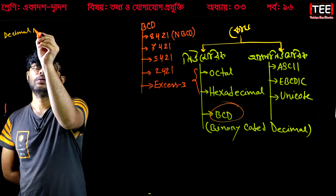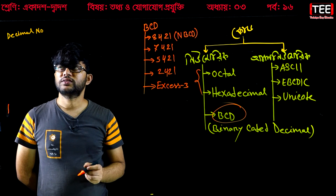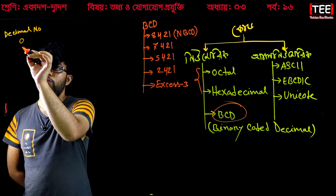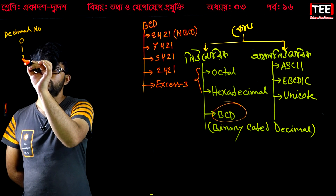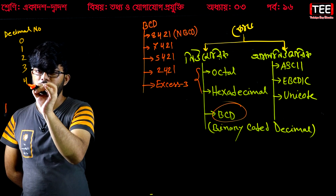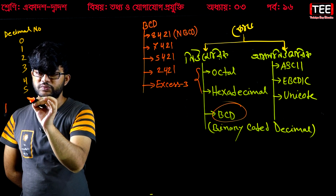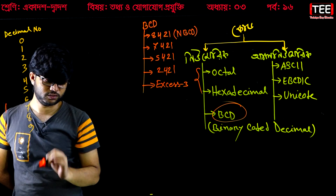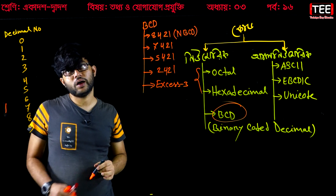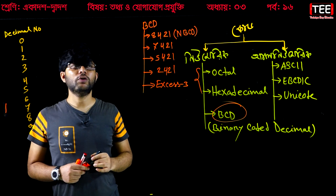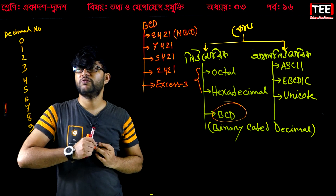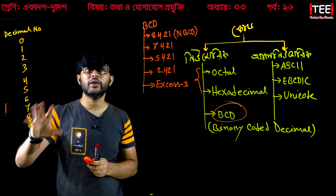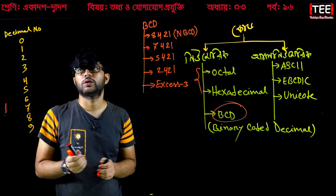The decimal numbers are: 0, 1, 2, 3, 4, 5, 6, 7, 8, 9. We convert each of these to BCD code. The definition we discussed: each decimal digit is converted to its 4-bit binary representation.